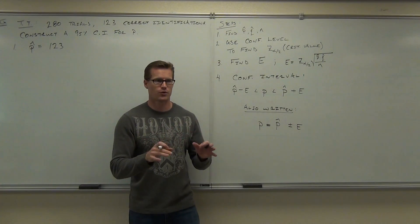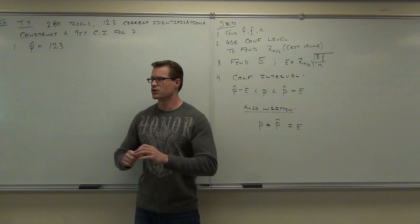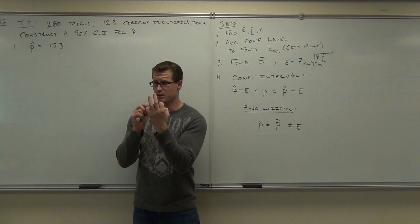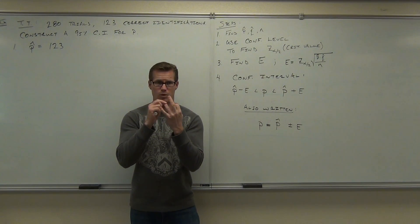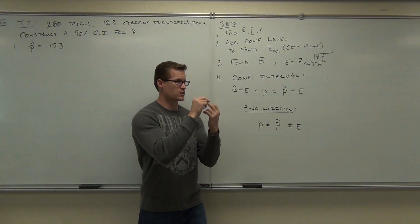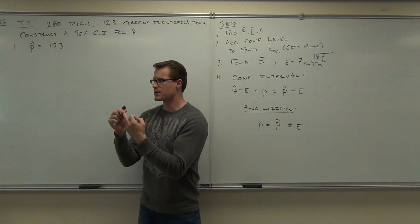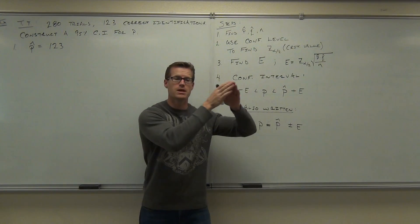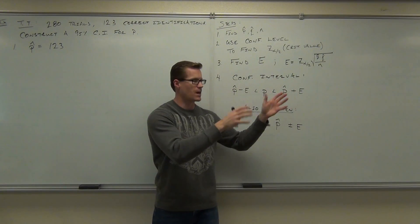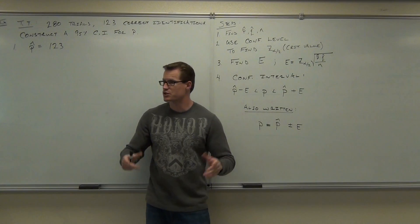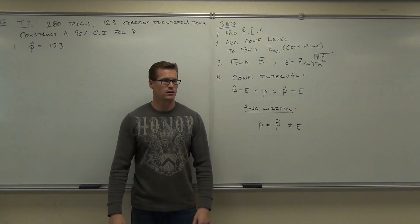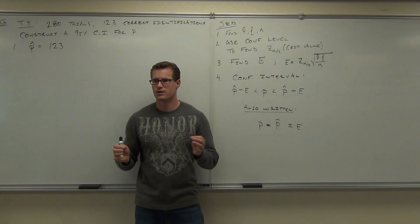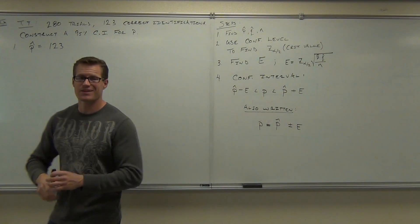Let me make it real clear for you. In the next three sections we do something that looks identical, but we're talking about three completely separate things. So if you do not make the distinction between dealing with a proportion and dealing with a mean when you have more than 30 sample size and dealing with a mean when you have less than 30 sample size, you're going to make huge mistakes on this test. You need to know when you're dealing with a proportion, when you're dealing with a mean. That's two categories. Definitely a proportion — it says P right there. Proportions are always between 0 and 1. They're never more than 1, so you can't just put 123 here.